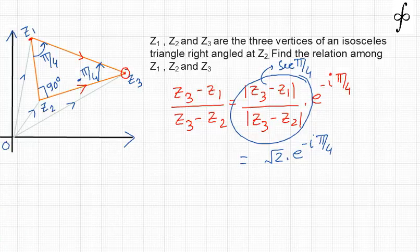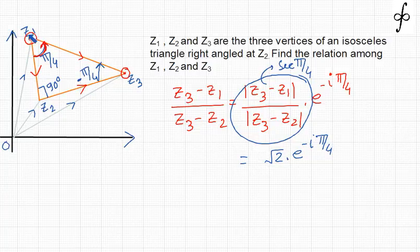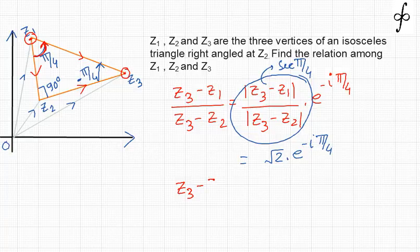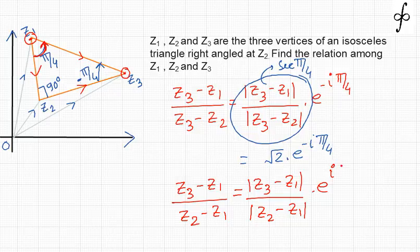Next, let us apply rotation about Z1 as the pivotal point. The angle of rotation is in the anticlockwise direction, so the angle is +π/4. The vectors emanate from the pivotal point Z1 — both vectors have their tails at Z1. This is the initial position and this is the final position. We write: (Z3 − Z1) / (Z2 − Z1) = |Z3 − Z1| / |Z2 − Z1| · e^(iπ/4).